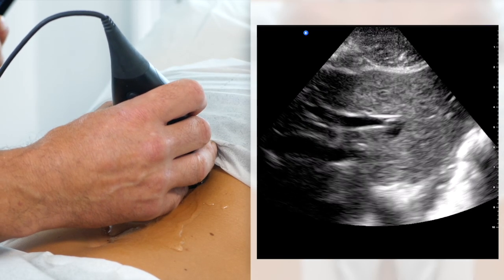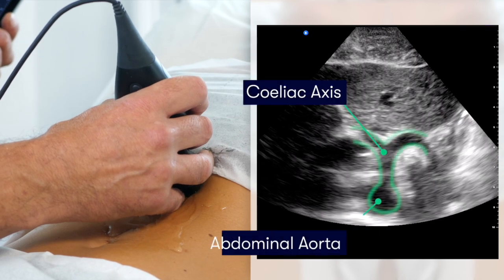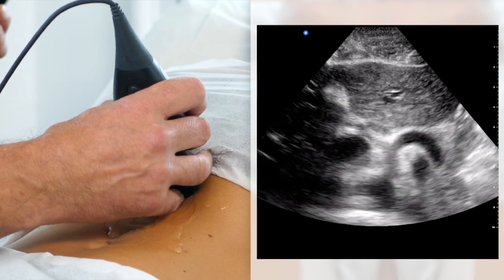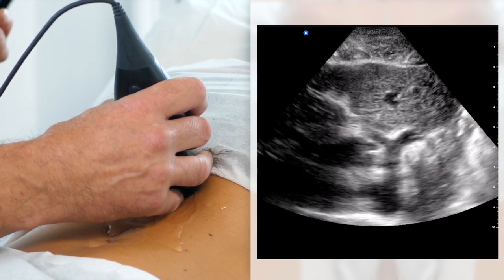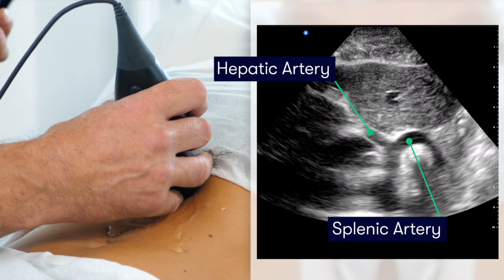Deep to the liver, we can now see the celiac trunk, or the celiac axis. The Y-shaped blood vessel which we can see here is the celiac trunk as it comes off the abdominal aorta on the patient's left side. Looking at the patient's left, we can see the splenic artery, and on the right side, we can see the hepatic artery.